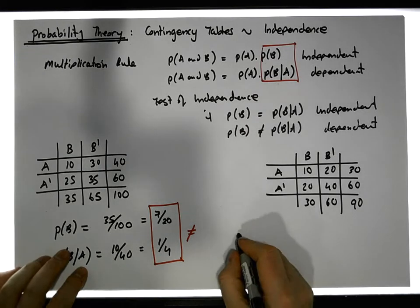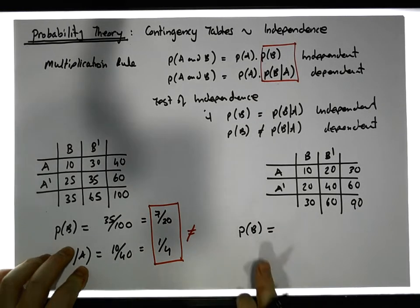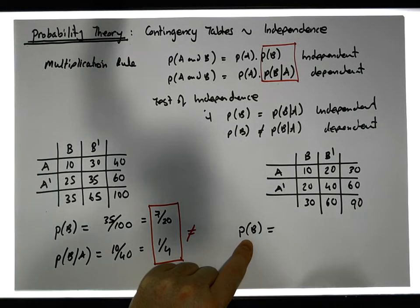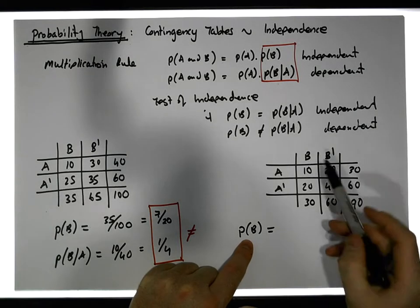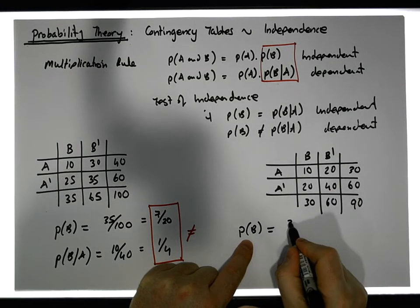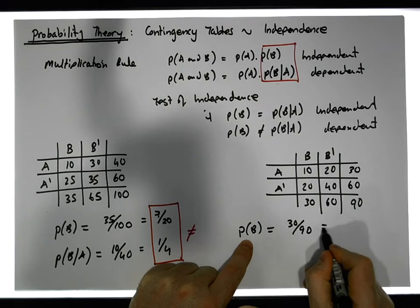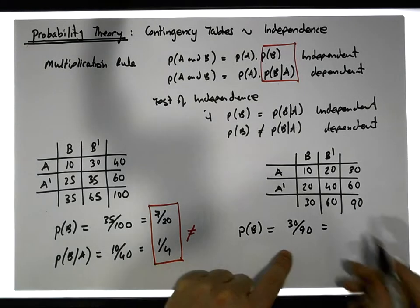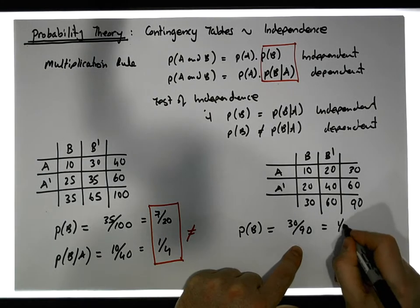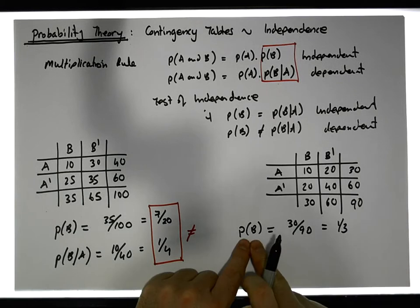Let's calculate the probability of B in this situation. Well, how many B's are there? There are 30 B's out of 90, so we have 30 over 90, which is the same as one third — you have a one in three chance of selecting B.